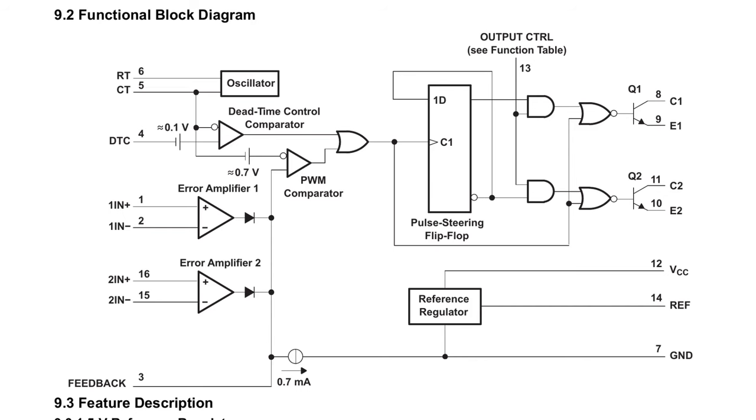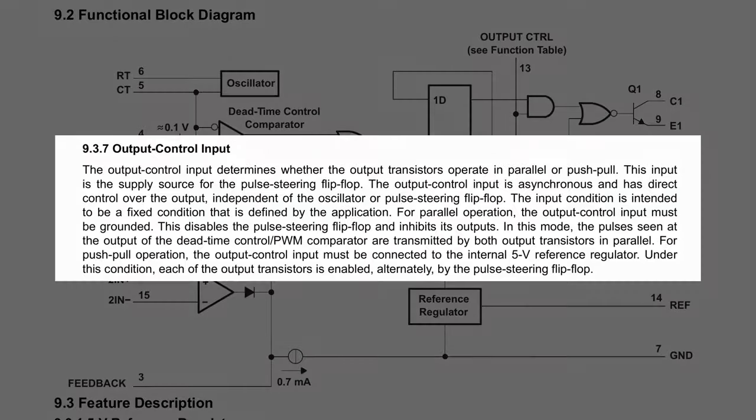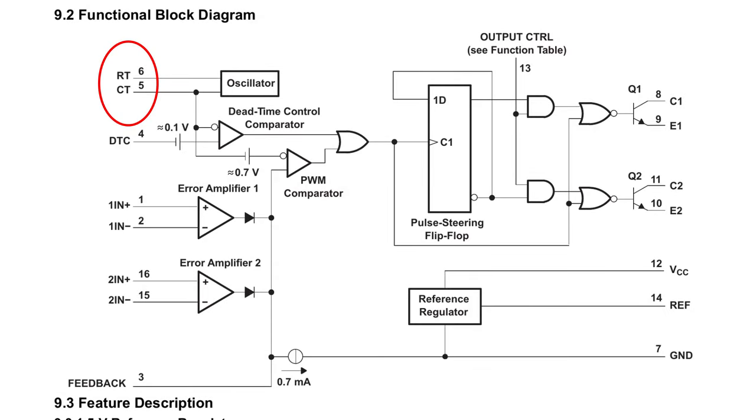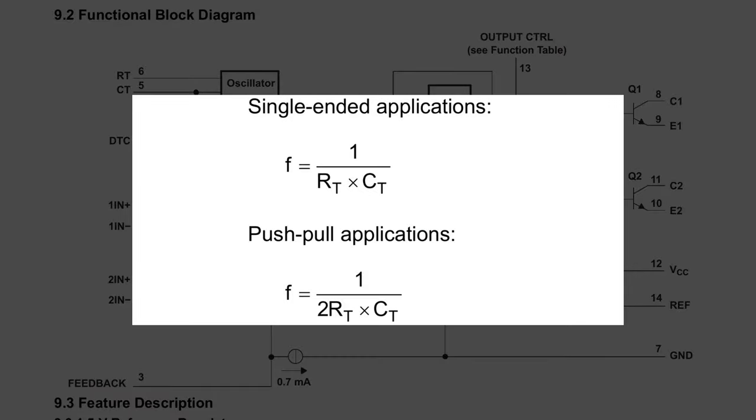Okay so here's the functional block diagram. Aside from the supply pins we can look on the left we have all the input pins. The output control pin decides whether we use it in a push-pull configuration or if both transistors work in the same way and can be put in parallel. On the top for pins 6 and 5 we can choose the frequency by connecting a capacitor and resistor here.